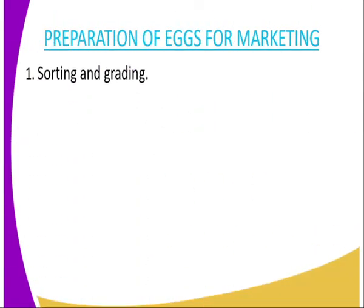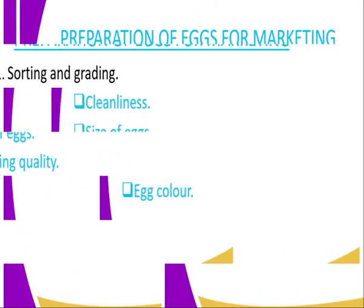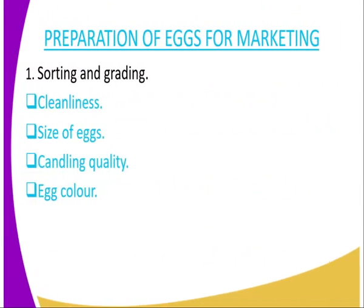Then we have preparation of eggs for marketing. The first one is sorting and grading. You are supposed to consider the factor of cleanliness — the eggs meant for marketing are supposed to be clean. Also regarding the size of the egg, the moderate size and the big size are the best, but small-sized eggs are supposed to be eliminated because they fetch small prices in the market.